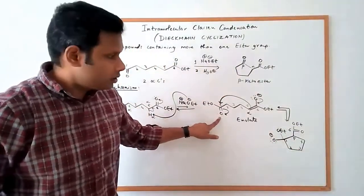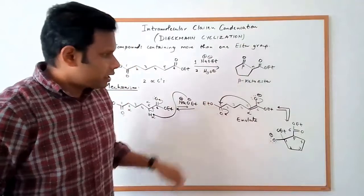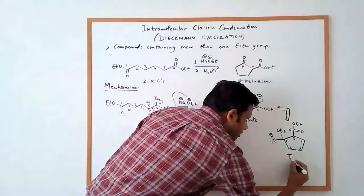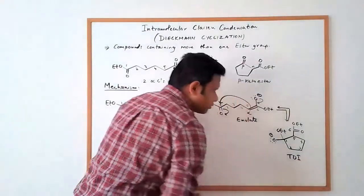And on 1, we have OEt. So 1 has the oxygen with the negative charge and it has the OEt, the ethoxy group. And so what we make here is the tetrahedral intermediate.